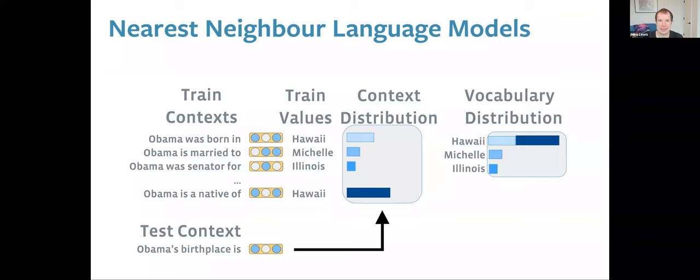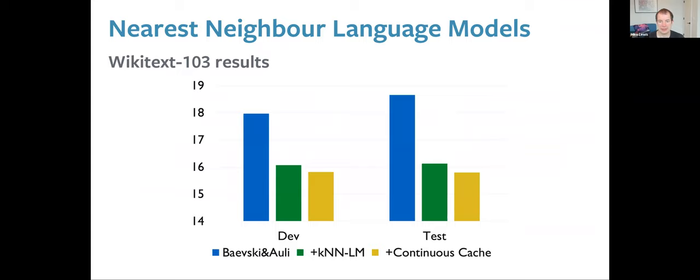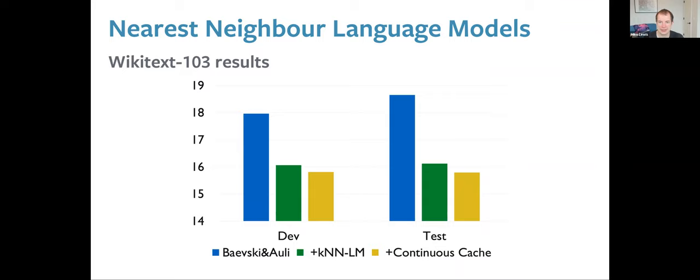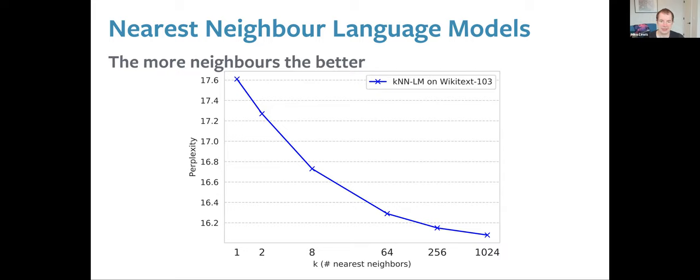We got remarkably good results. On a challenging language modeling benchmark — where lower perplexity is better — we improved a state-of-the-art model by well over two points just by adding this nearest neighbor model. This gives evidence that models are trying to memorize facts but finding it difficult, and we can help them by allowing models to learn representations and relying on separate non-parametric memories. As you increase the number of neighbors retrieved from training at test time, results improve monotonically with no obvious limits yet.